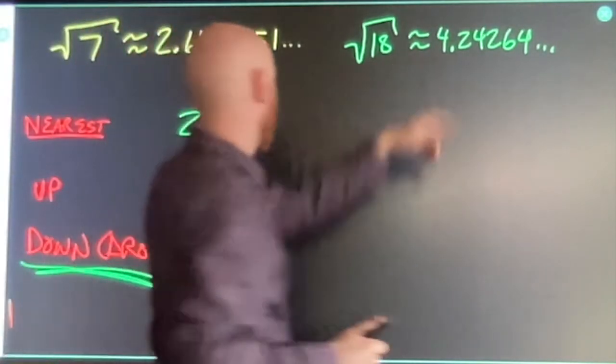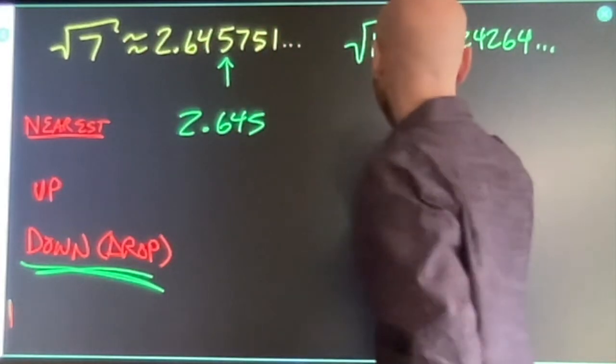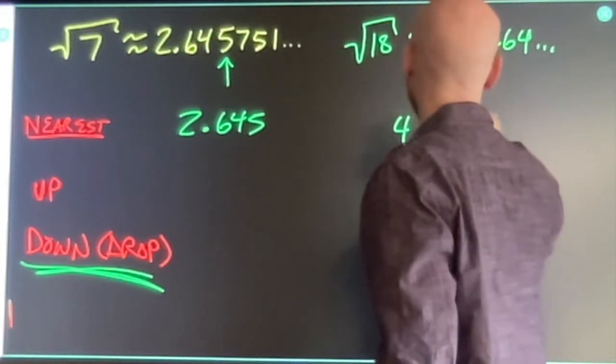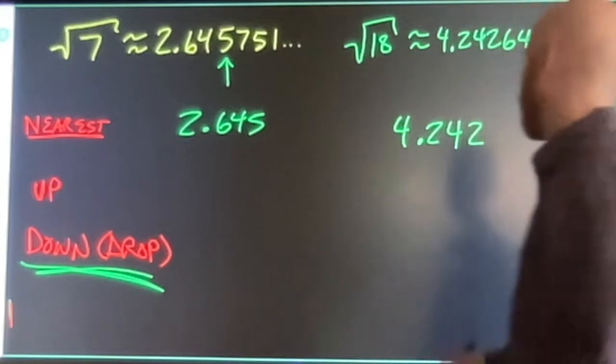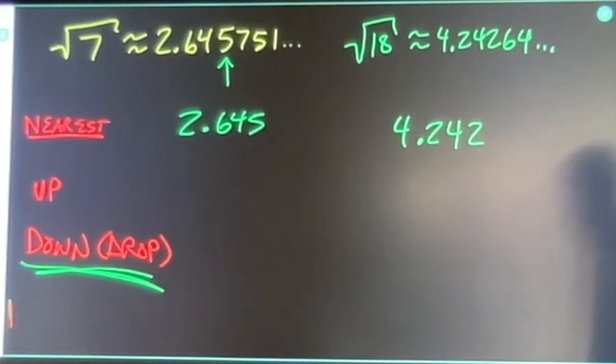Same thing here. If I'm rounding to the thousandth place, that's my third digit. Four point four two four. Done.